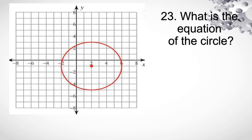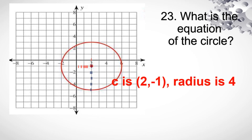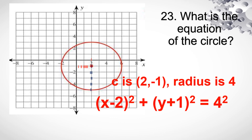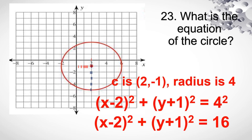Number 23. What's the equation of the circle? Hanapin muna natin yung center at yung radius. So yung center natin is found at (2, -1). From the center, 1, 2, 3, 4 units — so radius is 4. Using the formula, the quantity of x minus h squared plus quantity of y minus k squared is equal to r squared. Substitute na lang natin. Evaluate yung 4 squared. That will give us this equation.